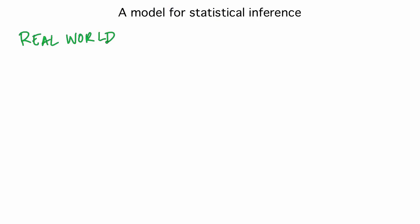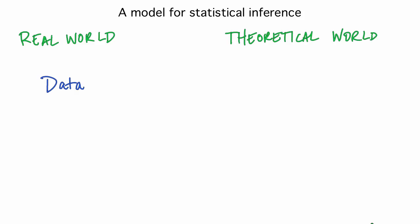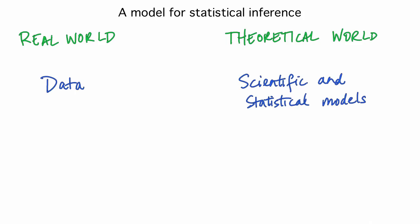We have our real world — this is the world we experience and where we make our measurements — and in our real world we have our observed data. Underlying this is a theoretical world. This world explains how the real world works. It includes scientific and statistical models that describe the probability distributions for our random measurements. Observations of these random measurements are our data. The theoretical world could also be a population, and our data could be measured on a sample from the population, with the randomness in the data due to the randomness in the sampling process.